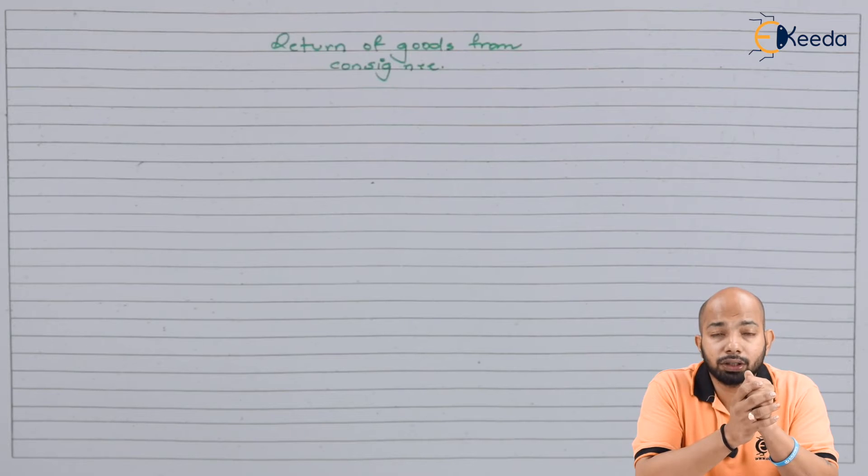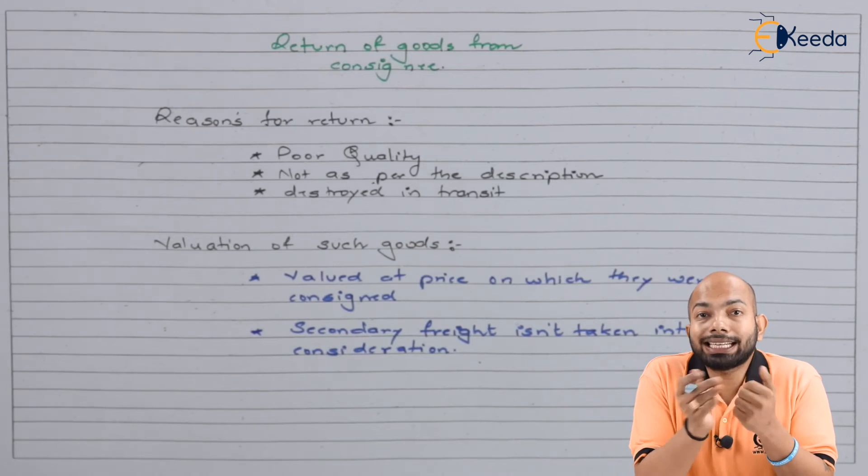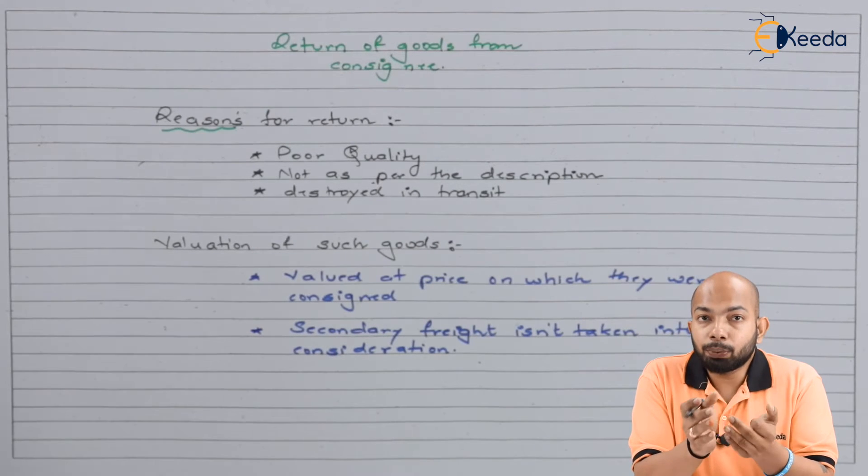I'll be jotting down certain points here for your reference. As we've mentioned the details, let's figure out what exactly we have here. The first part is the reasons - poor quality of goods.